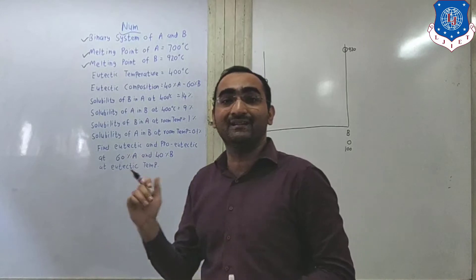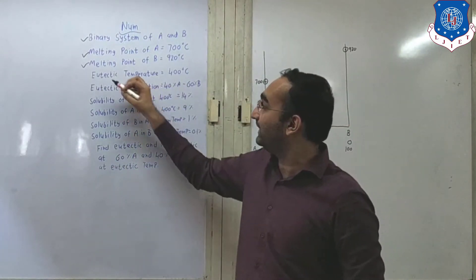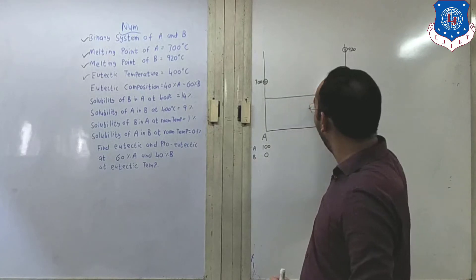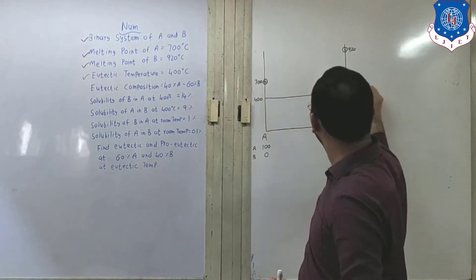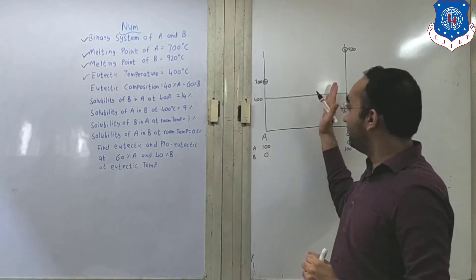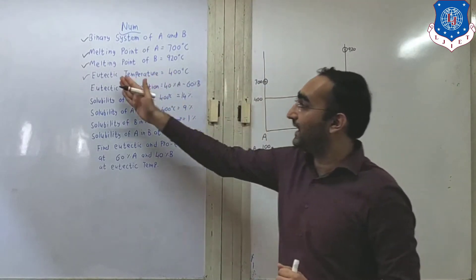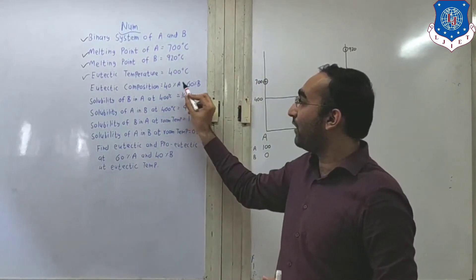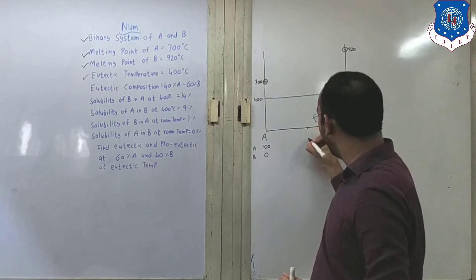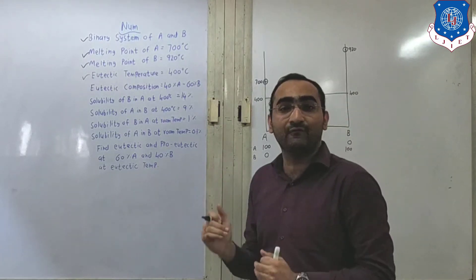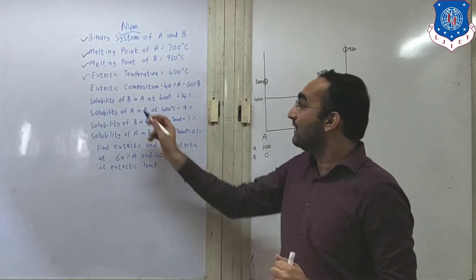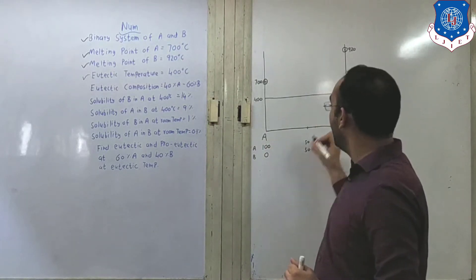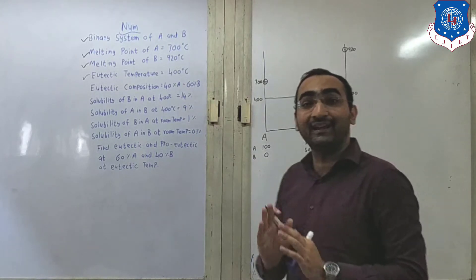Going forward, where does the reaction occur? The eutectic temperature is 400 degrees Celsius. For the eutectic temperature, make a line at the 400 degrees Celsius mark — that is the eutectic temperature. After that comes the eutectic composition. Where does the reaction occur? It occurs at 40A and 60B. Before going there, make it as a 50-50 mark so it will be easier to plot the points on the graph. 40A is over here, so there will be 40A and 60B — at this particular point the eutectic reaction occurs.